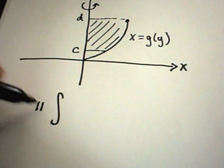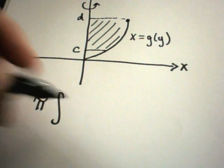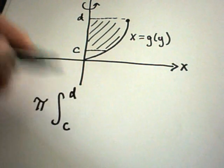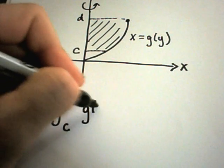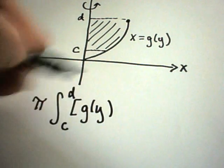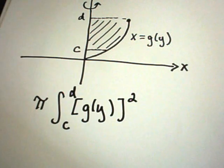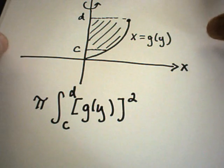The formula is you just integrate with a pi from c to d, your limits of integration now coming from the y-axis, and then just g of y quantity squared. So I'm going to do two of these. I'm not going to do as many as the other case, but you'll see that the idea is exactly the same.